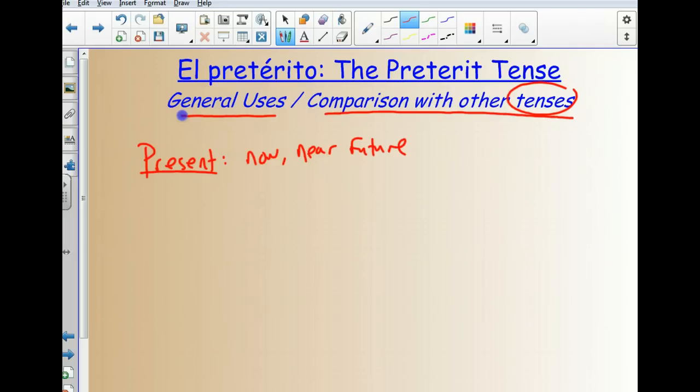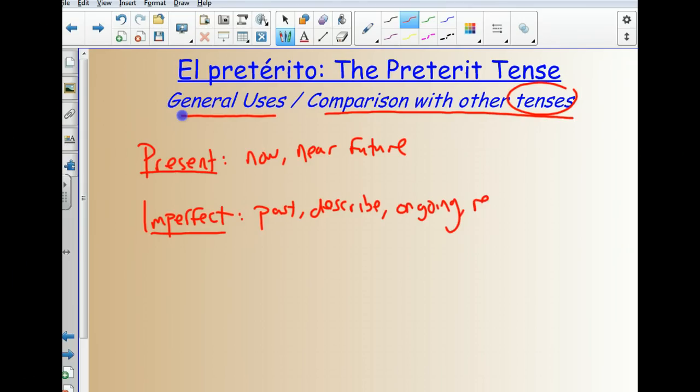We've also learned the imperfect tense, or el imperfecto. We use this as a past tense. We used it to describe past actions, and for ongoing actions in the past, repeated actions in the past. So we could say something like, Cuando yo era niño, yo iba al parque mucho. When I was young, I used to go to the park a lot. And that's a past tense takes place in the past, and something that was repeated over and over again.